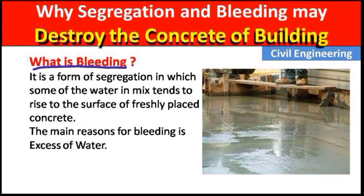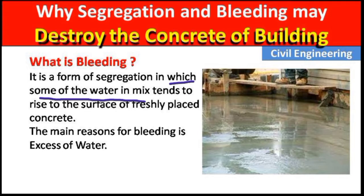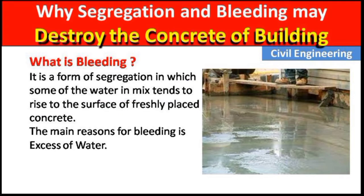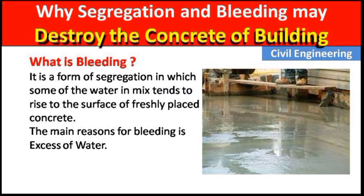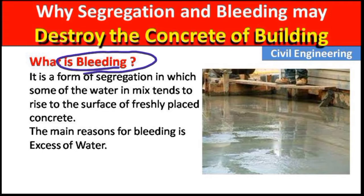What is bleeding? Bleeding is a form of segregation in which some of the water in the mix tends to rise to the surface of freshly placed concrete. When we prepare freshly placed concrete, some amount of water comes above the concrete — this defect is known as bleeding. It is very dangerous for concrete because when bleeding happens, the water evaporates from the surface and hydration cannot take place, making the concrete weak.